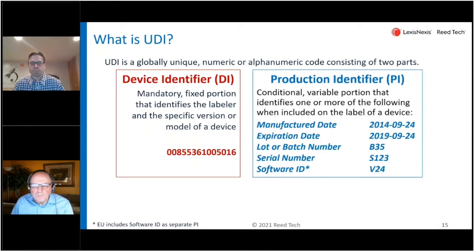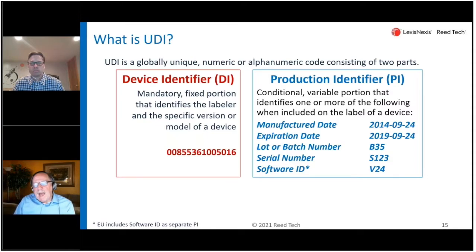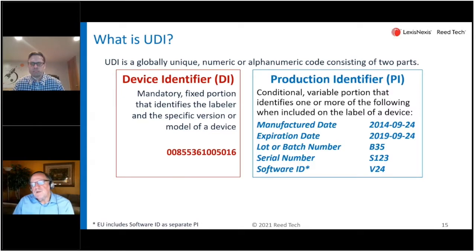The second portion that follows is referred to as a production identifier. In the event there are various production controls placed on the label, these would be added to the UDI to make up the full UDI. If they don't appear on the label, then none of these production identifiers would be there, and you remain just with the device identifier.